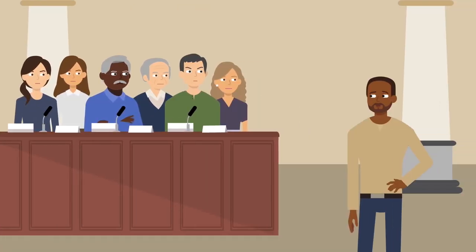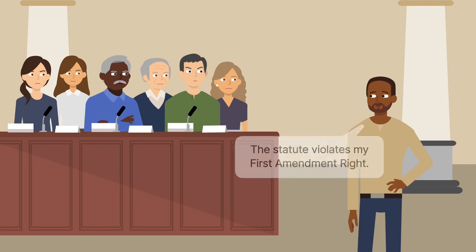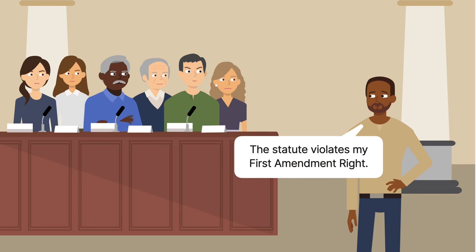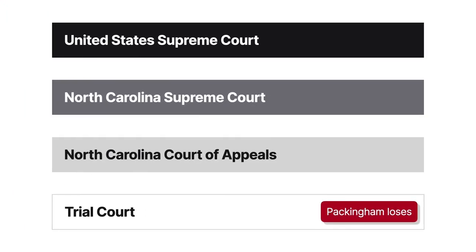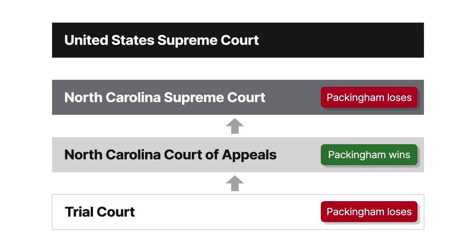Packingham was indicted by a grand jury for violating the statute. Packingham moved to dismiss the indictment, arguing the statute violated the First Amendment. The trial court denied the motion. Packingham was convicted. He appealed. The North Carolina Court of Appeals struck down the statute on First Amendment grounds. North Carolina appealed. The state Supreme Court reversed and found the law constitutional. The United States Supreme Court granted cert.